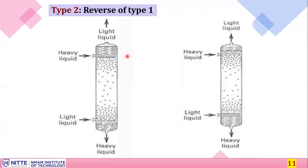In summary, we have seen three different types of equipment used for extraction: mixer-settler, rotating disc contactor, and spray tower extractor. These can be used for single-stage as well as multiple-stage operations. Thank you.